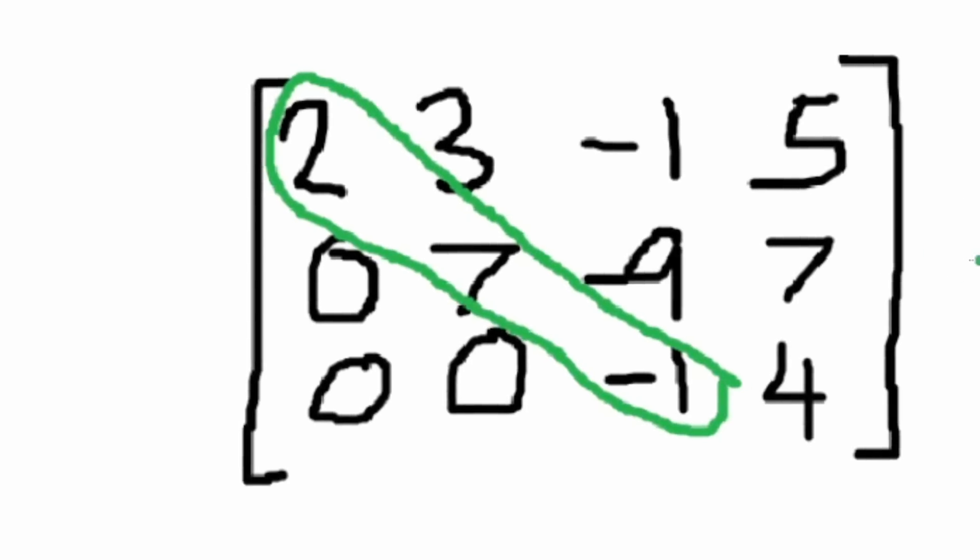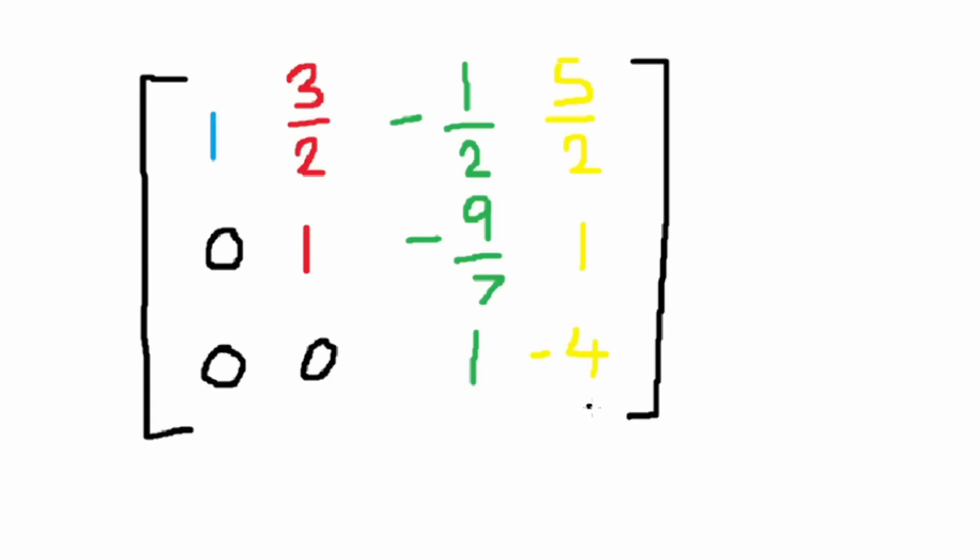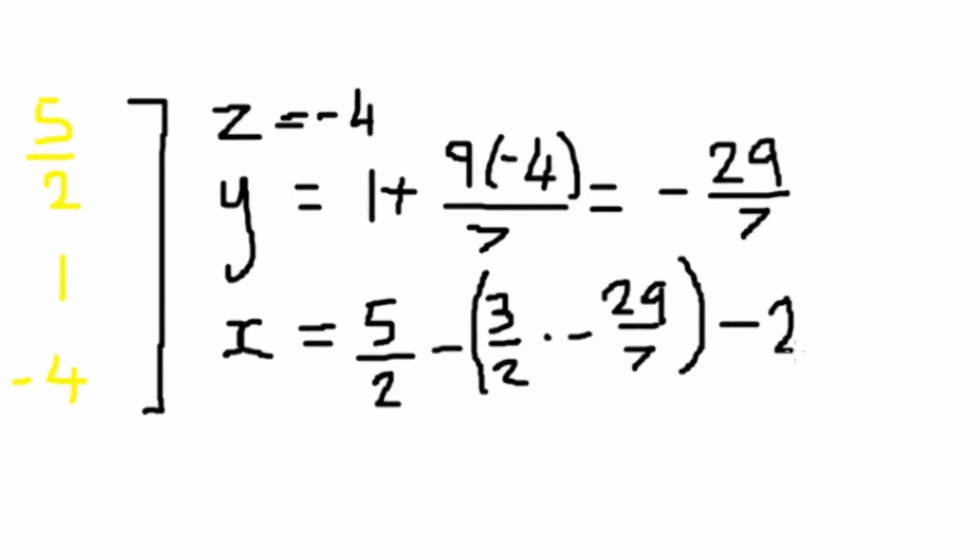And so, by making all of these coefficients one through some basic arithmetic, we get the row echelon form, allowing us to directly substitute and solve this system pretty easily.